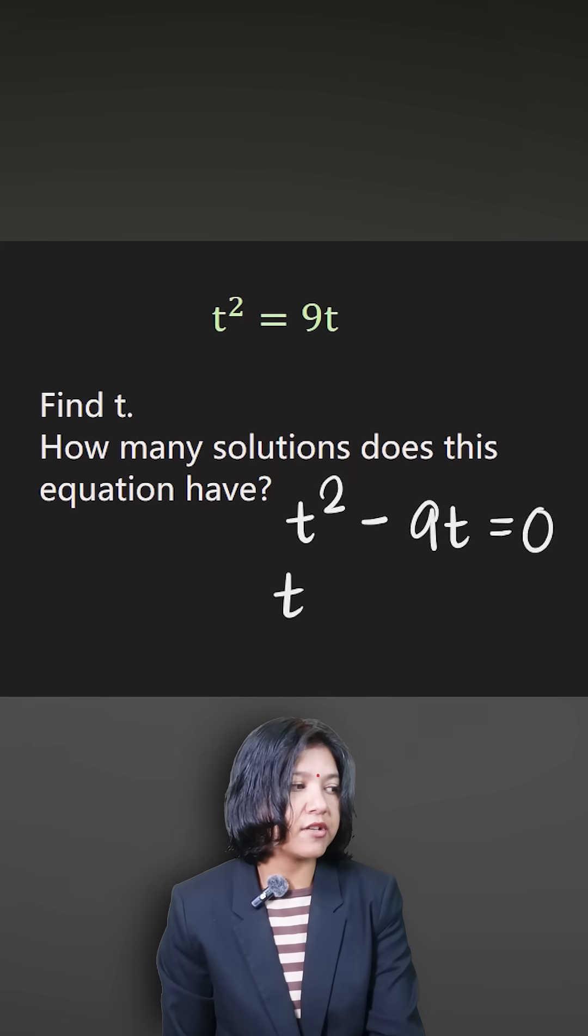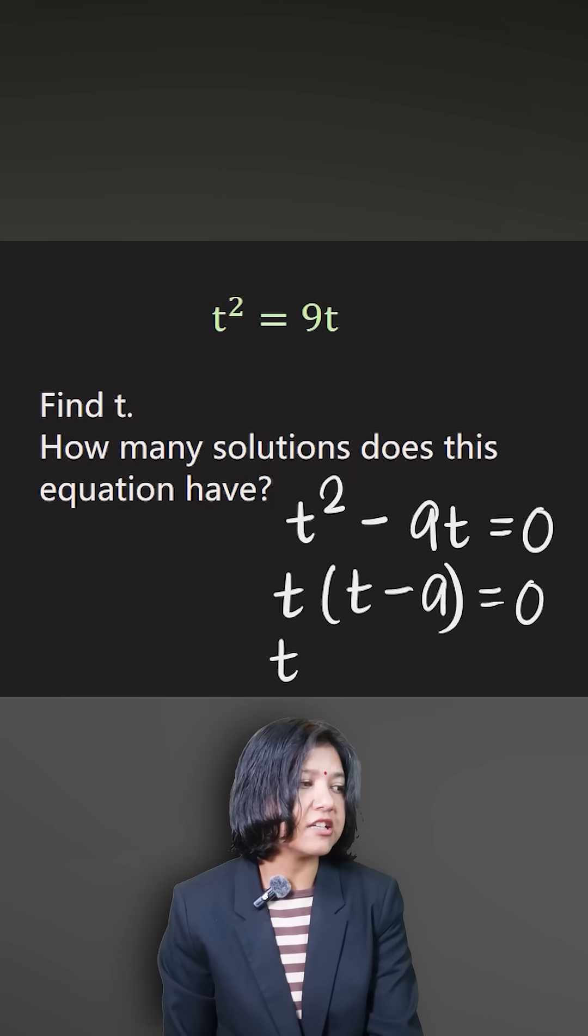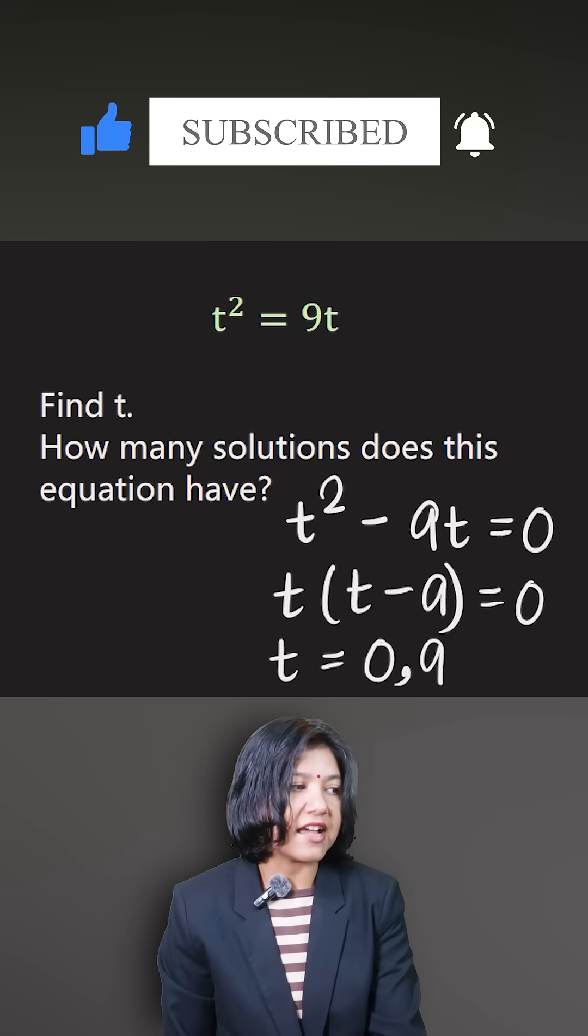Okay, you take out t common, t minus 9 is the other factor, telling me there are two values for t, which is equal to zero and the other value is nine.